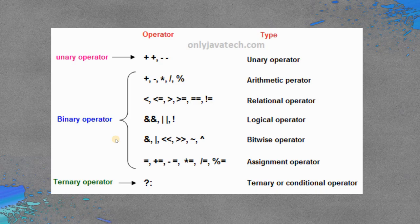Firstly, we are going to look at some classifications of operators. There are basic classifications like unary operator, binary operators, and ternary operators. In case of unary operators, there are two operations: double plus and double minus. In case of ternary operator, there is a question mark along with the colon.